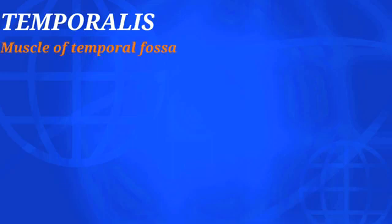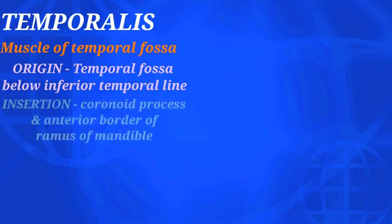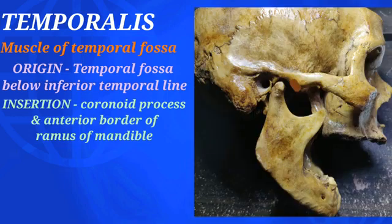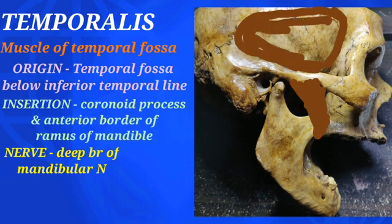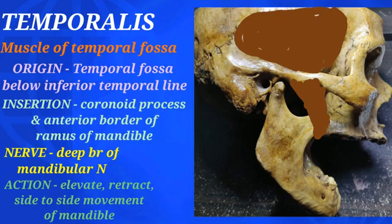Temporalis is a fan-shaped muscle of the temporal fossa that originates from the floor of the temporal fossa below the inferior temporal line. It converges to form a tendon, passes deep to the zygomatic arch, and inserts into the coronoid process — its tip, medial surface, and anterior border — as well as the anterior border of the ramus of the mandible. It is supplied by the deep temporal branches of the mandibular nerve, and its action is to elevate and retract the mandible; from both sides, it causes side-to-side movement.